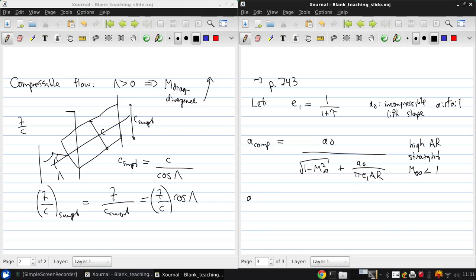If we have a low aspect ratio wing, then we combine this with what we had before and add our Prandtl-Glauert factor plus A0 over pi E1 AR. And this is low aspect ratio straight subsonic compressible.